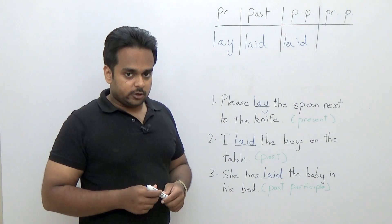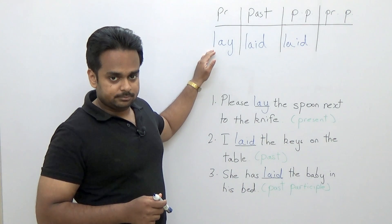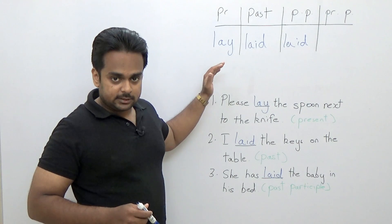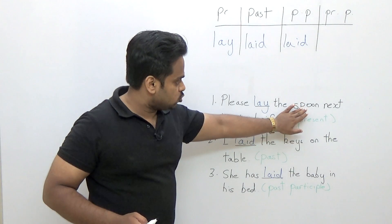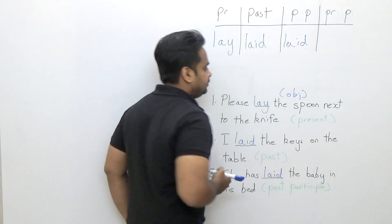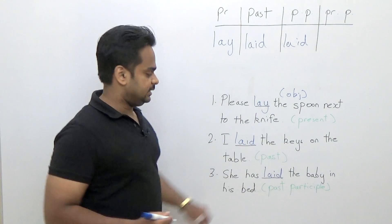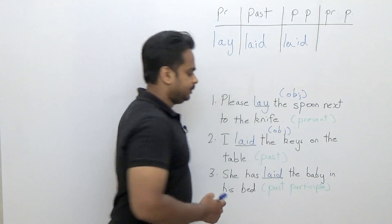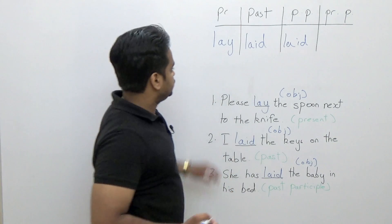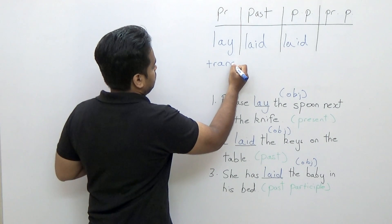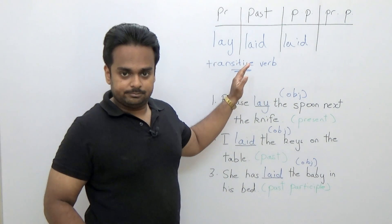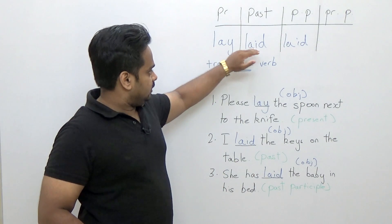One important thing to notice is that the verb 'lay' is a transitive verb — meaning it always takes an object. In all these examples: 'Please lay the spoon' — the spoon is the object. 'I laid the keys' — the keys are the object. 'She has laid the baby' — the baby is the object. So 'lay' is always transitive; it will always take an object. To summarize: lay, laid, laid.